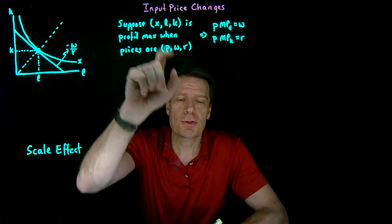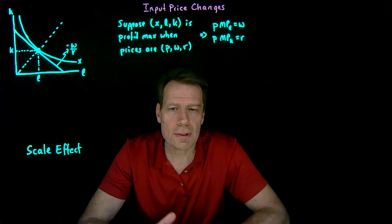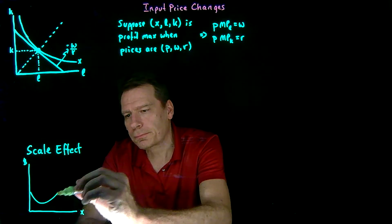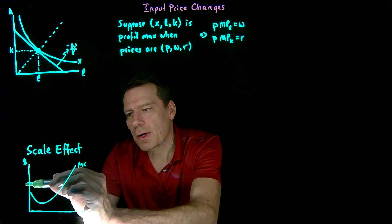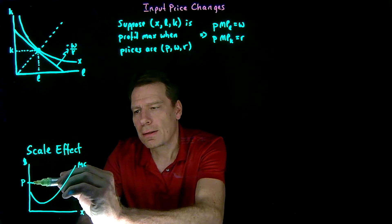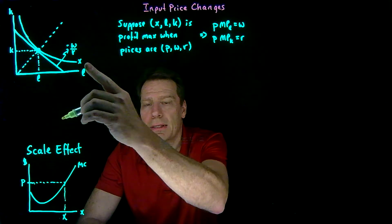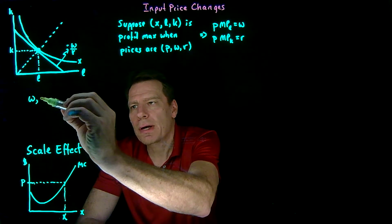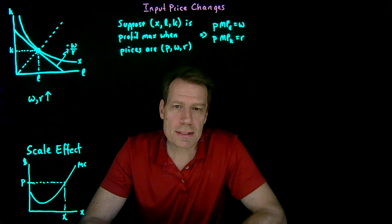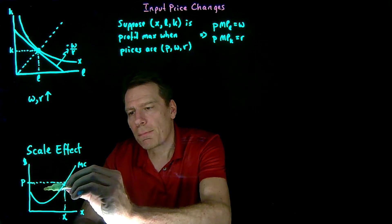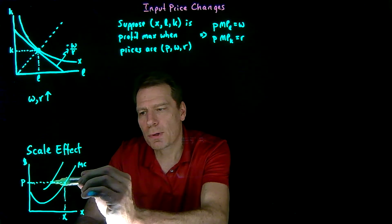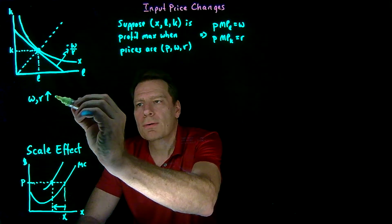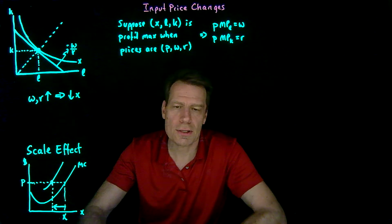The same thing is going to happen when we have changes in input prices. The easiest way to see that is to go to the second step of the two-step profit maximization method, where we drew the marginal cost curve. The marginal cost curve tells us where we're going to produce once we know what the output price is. We produce where price equals marginal cost, giving us the profit-maximizing quantity. Now, suppose that one of the input prices goes up — either the wage or the rental rate. If input prices go up, then marginal costs of producing are going to go up, so we get an upward shift in marginal costs. That means the intersection with price falls to the left — we end up producing less and scale down. So an increase in input prices causes the firm to produce less when it can adjust both labor and capital.